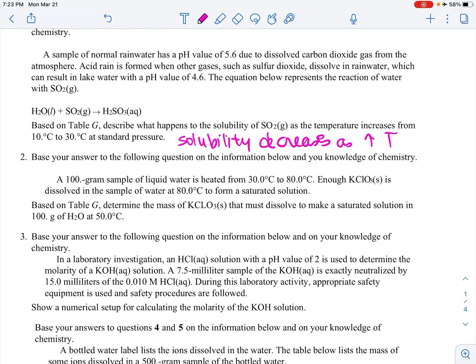Okay, a 100 gram sample of liquid water is heated from 30 degrees Celsius to 80 degrees Celsius. Enough KClO3, or potassium chlorate, is dissolved in the sample of water at 80 to form a saturated solution. So remember, this is on the line. Based on table G, determine the mass of KClO3 that must dissolve to make a saturated solution of 100 grams of H2O at 50 degrees Celsius.